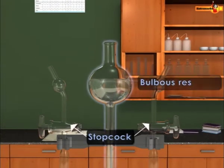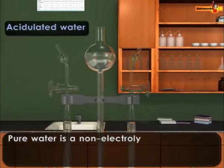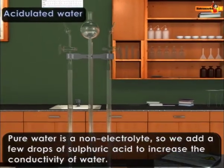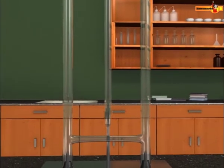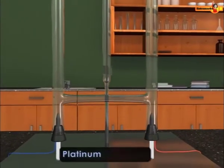The two outer glass tubes are connected to a platinum electrode. These electrodes are connected to the positive and negative terminals of the battery.